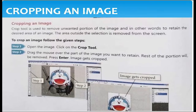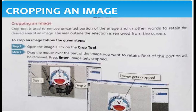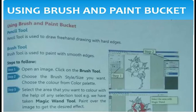Next one is cropping an image. The cropping tool is used to remove the unwanted portion of the image — in other words, to retain the desired area of an image. The area outside the selection is removed from the screen. To crop the image, click on the crop tool, drag the mouse over the part of the image you want to retain, and press Enter. The image gets cropped.